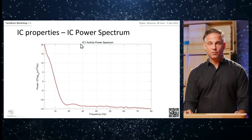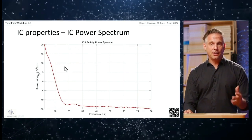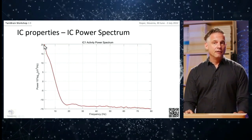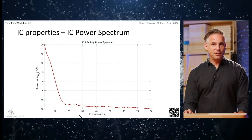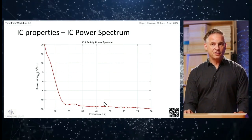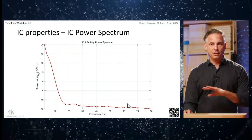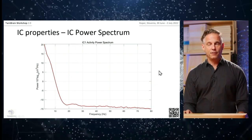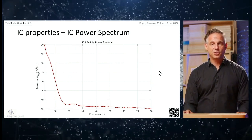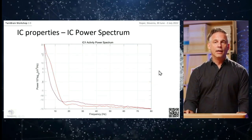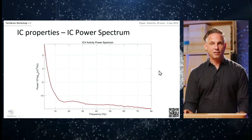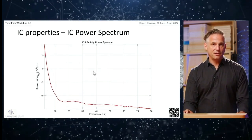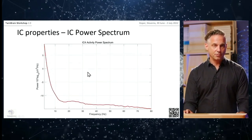IC1, the vertical eye movement, shows a very steep 1/f decrease that then flattens — power stays at the same level with no further change. The horizontal IC4 shows more or less the same spectral pattern.